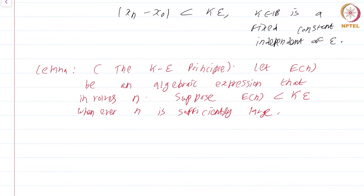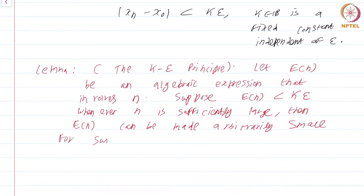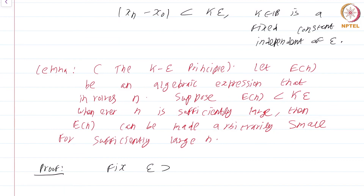Then E of n can be made arbitrarily small for sufficiently large n — you will see that in the proof, but you should have guessed what this means from the discussion we had. What we have is that E of n can be made less than k·epsilon whenever n is sufficiently large. So fix epsilon greater than 0 and set epsilon_1 to be epsilon divided by capital K.